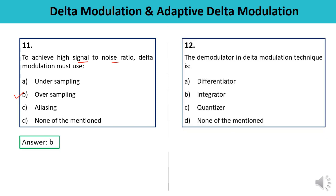Question 12: The demodulator in the Delta Modulation technique is what? The demodulator used in Delta Modulation is actually a simple form of an integrator. So the answer is B — integrator.